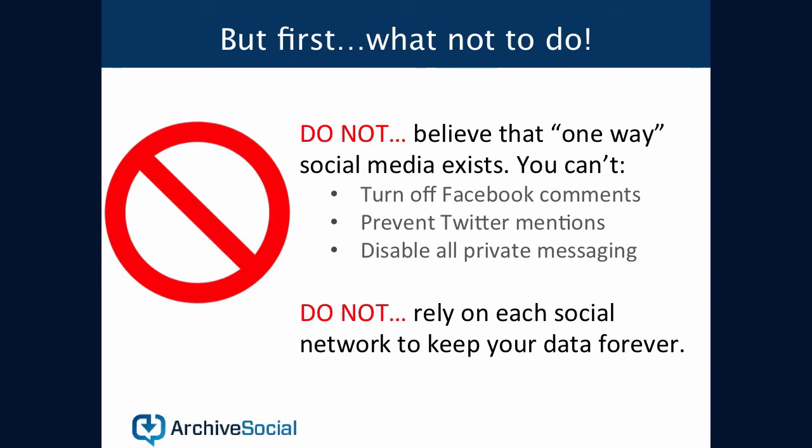More importantly, most organizations are still relying on the social networks to retain the data for when they need it. This is extremely dangerous because the moment something is deleted from Twitter and Facebook, it's gone forever. The social networks have provided zero guarantees that your data will be available and accessible for the long term. In fact, features such as 'download your data' and Twitter's archive are actually very misleading and only provide a small fraction of your data. These download features do not include anything that was deleted in the past, and they also do not include any third-party content such as the comments, mentions, and private messages that you might have received. Hence, you absolutely cannot rely on the social networks as your archive.